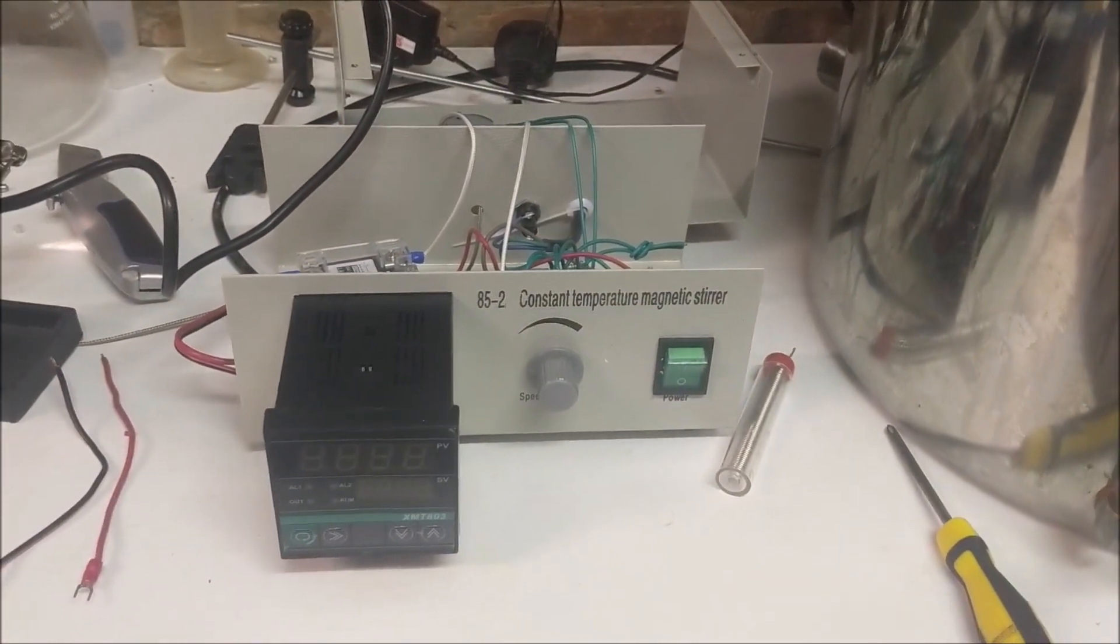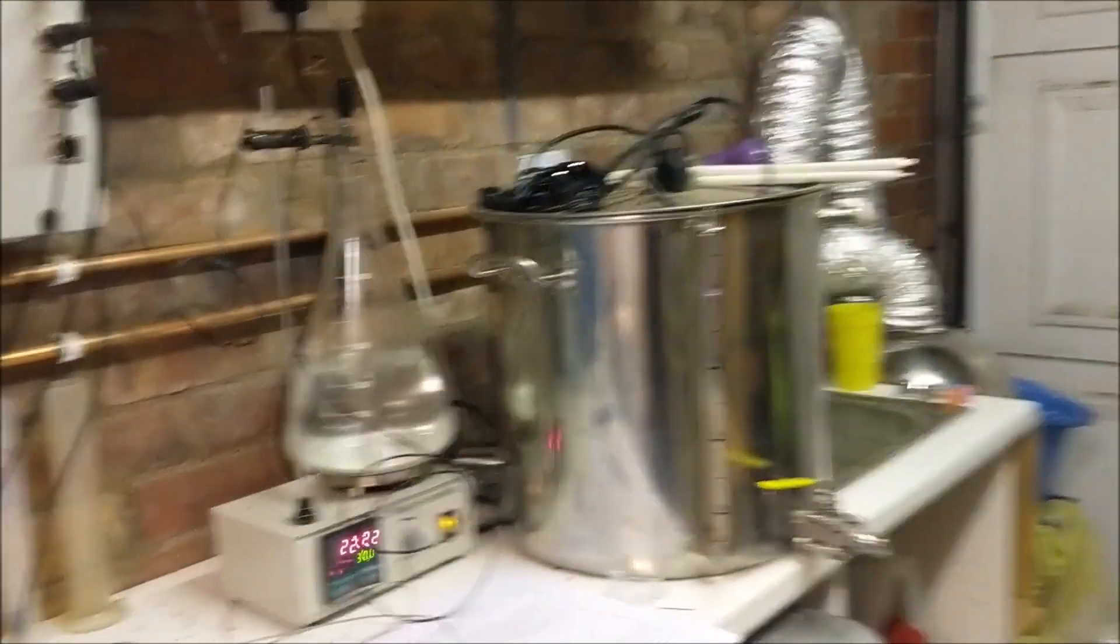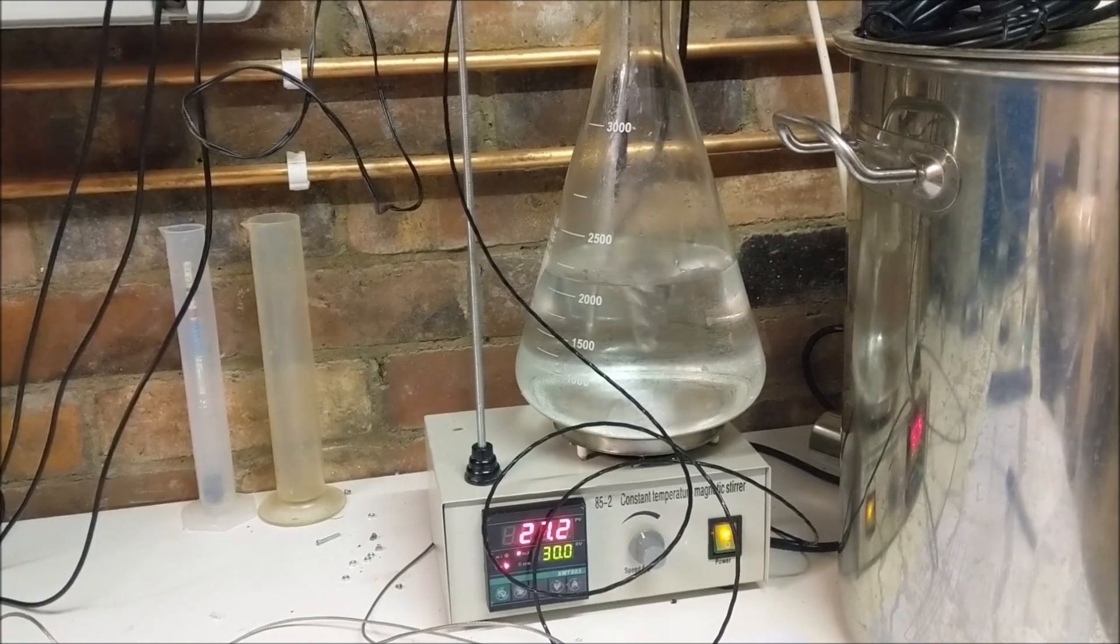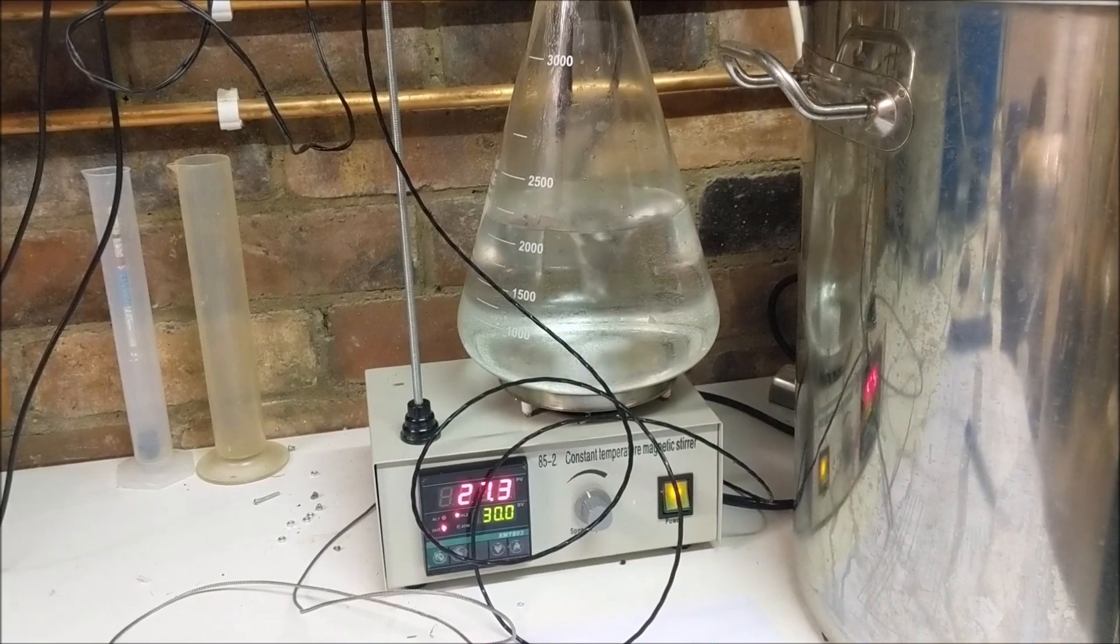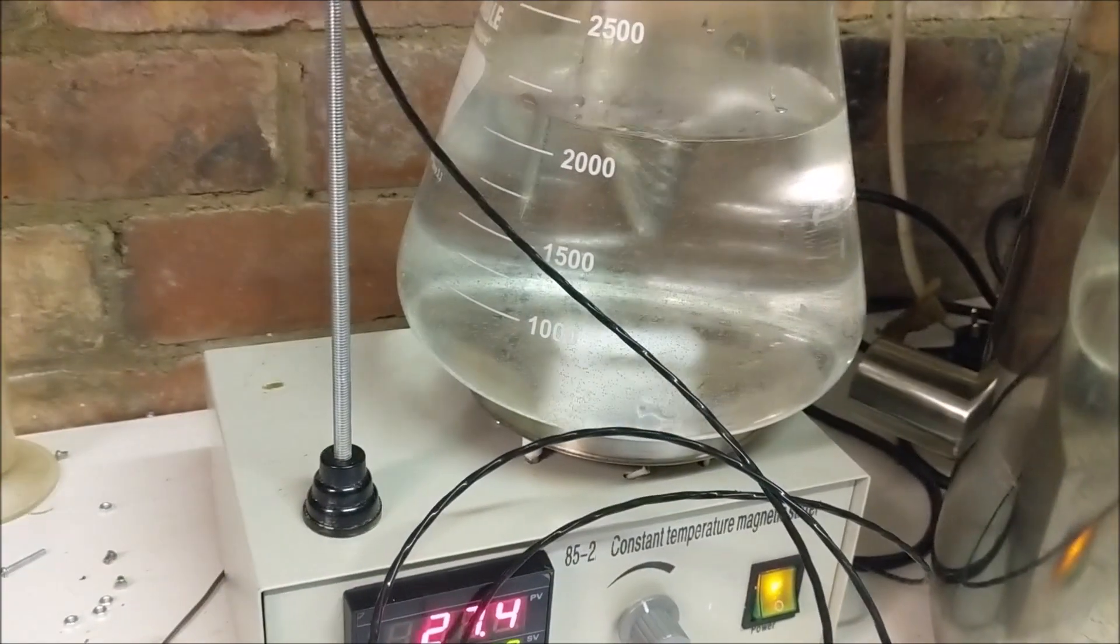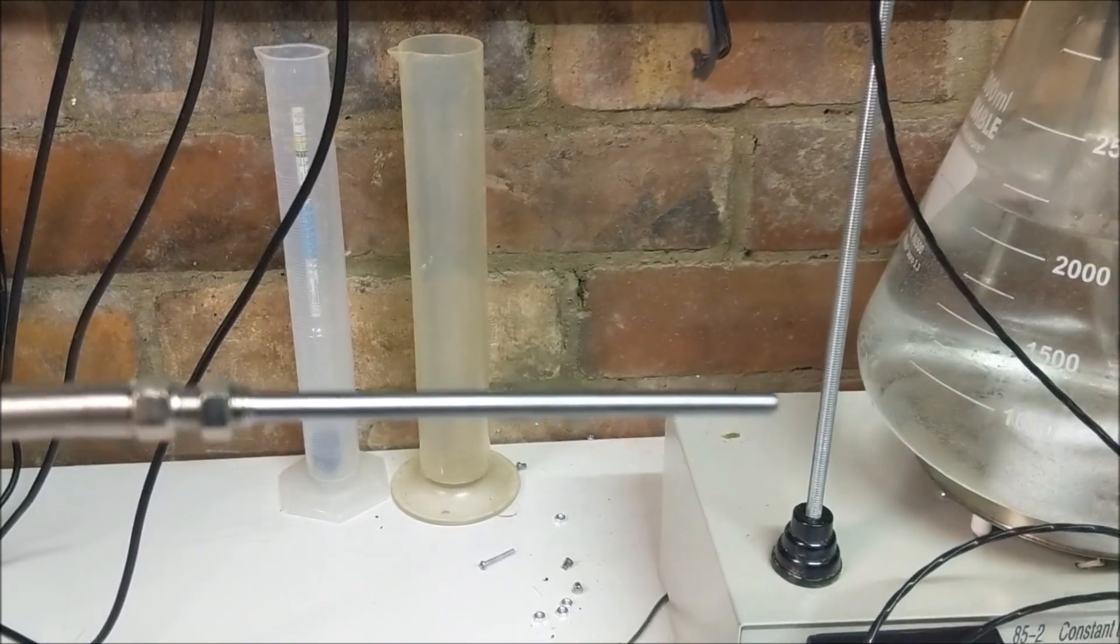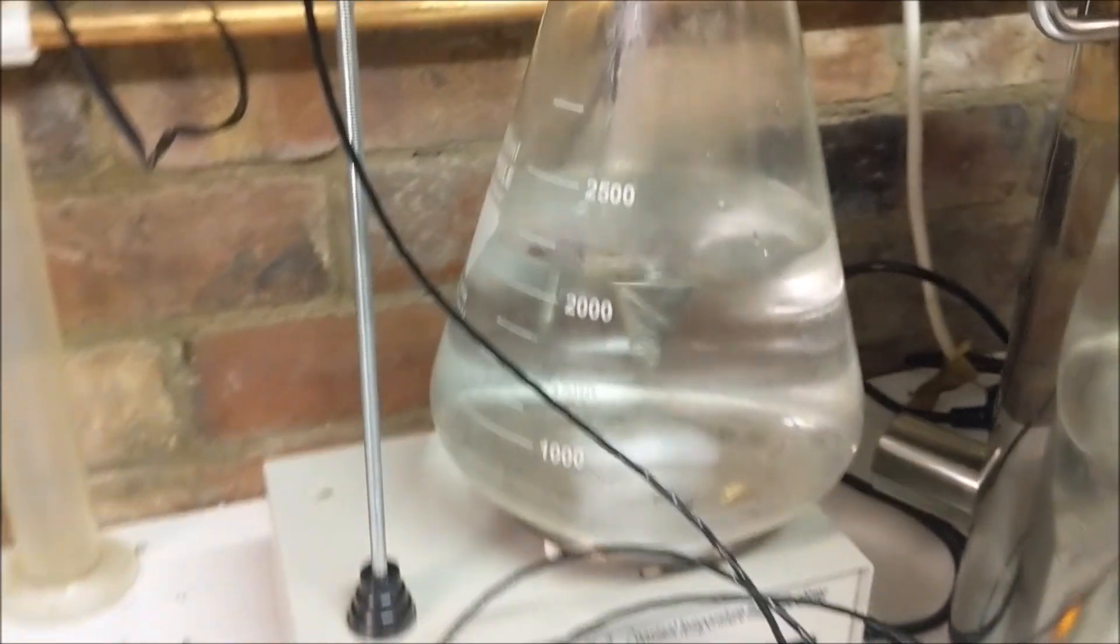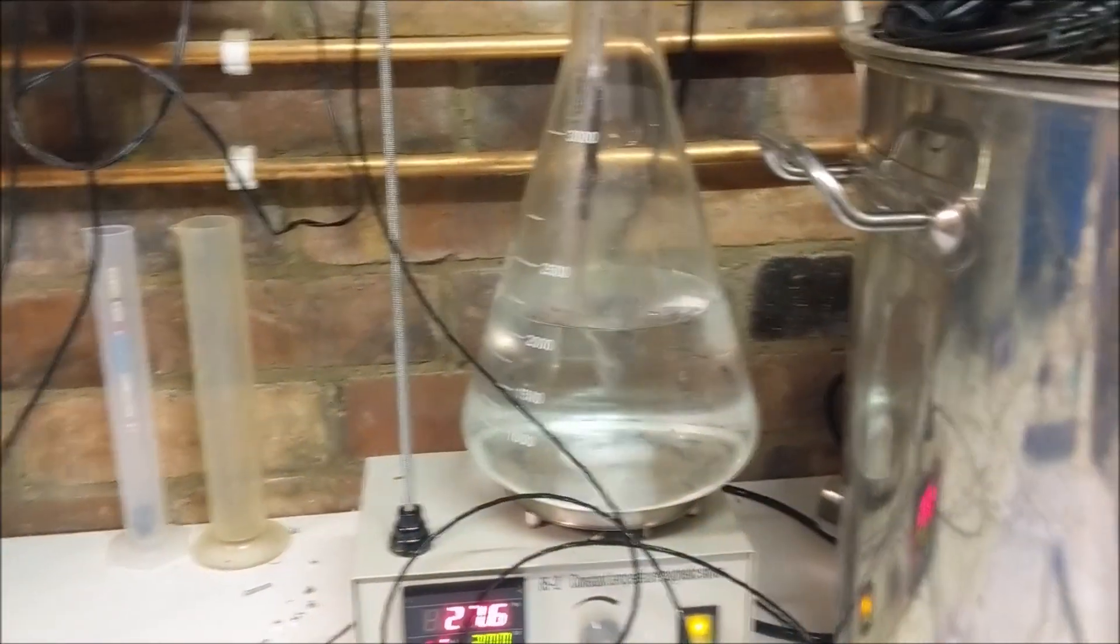Welcome back to a slightly more epic temperature controlled stir plate setup. First change from when you saw me putting it together previously is I put in the same temperature sensor, supposed to be PT-100, that came off the internet. If you set it accurately at zero degrees C in some lovely iced water, it was then five degrees off at 20 degrees C, so basically useless.